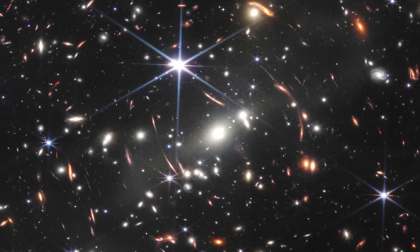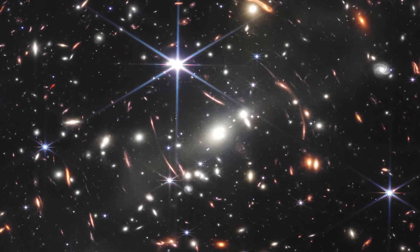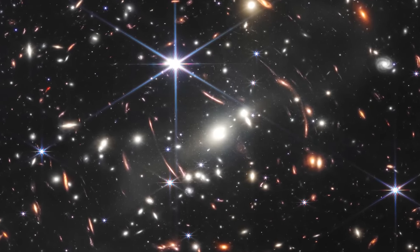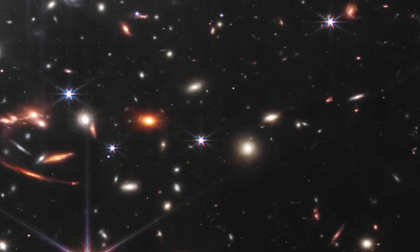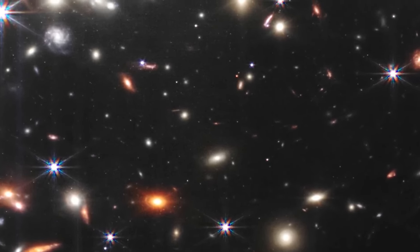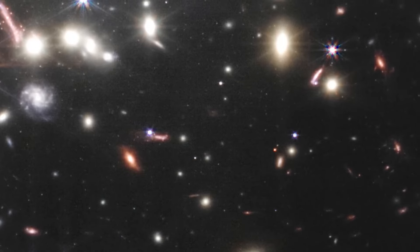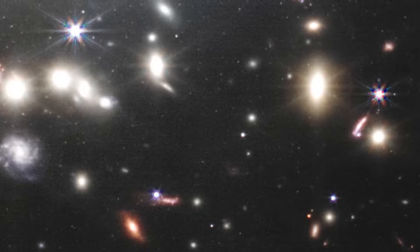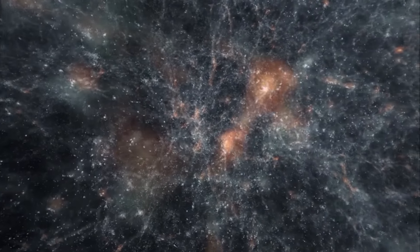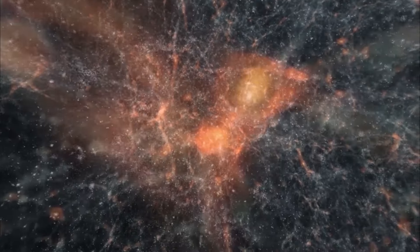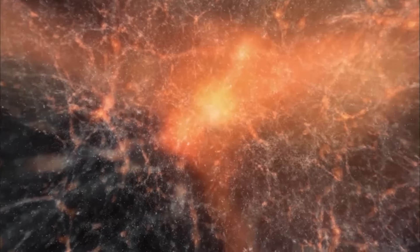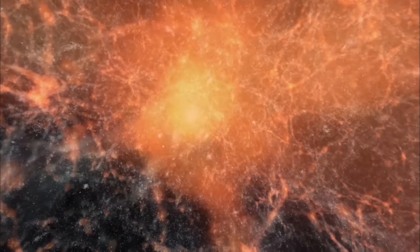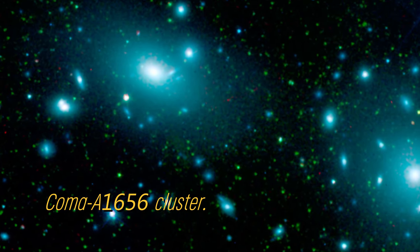The James Webb Telescope findings challenge what we thought we knew about the Big Bang, leaving scientists at a crossroads. Despite this, NASA recently tweeted about a galaxy cluster that lies just 650 million years after the Big Bang, adding another intriguing piece to the puzzle. Astronomers have analyzed the data and concluded that this fledgling cluster is expected to grow in size and become something similar to the colossal COMA A1656 cluster.